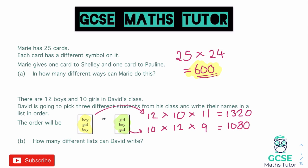So there are 1,320 ways of doing the first list and 1,080 ways of doing the second list. To get the total for all of those combined, we just add them both together: 1,320 plus 1,080 gives us a total of 2,400 different lists that David can write. That's our final answer for that question.